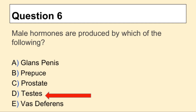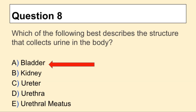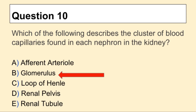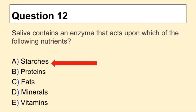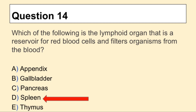Question 6: the answer is D, testes. Question 7: the answer is B, prostate. Question 8: the answer is A, bladder. Question 9: the answer is C, nephrolithiasis. Question 10: the answer is B, glomerulus. Question 11: the answer is E, urethra. Question 12: the answer is A, starches. Question 13: the answer is C, peristalsis.